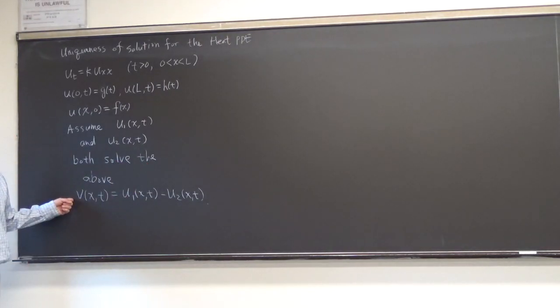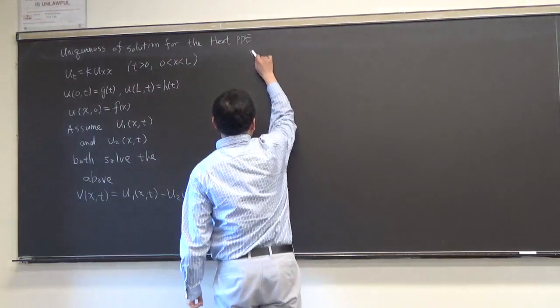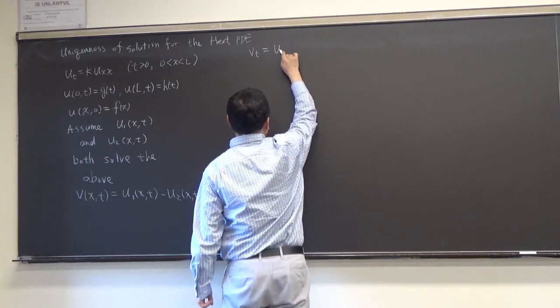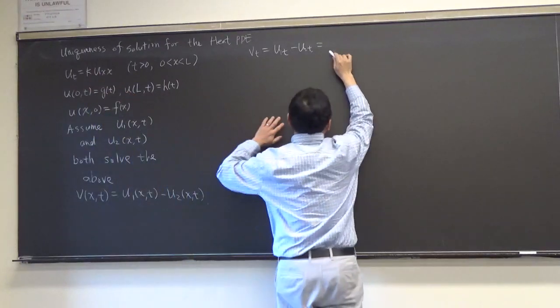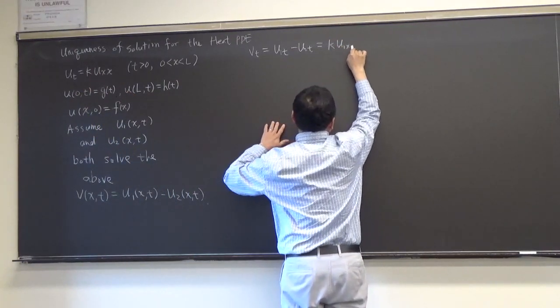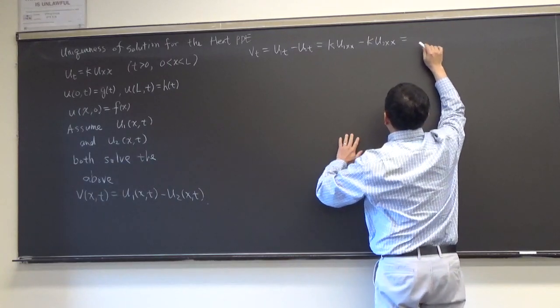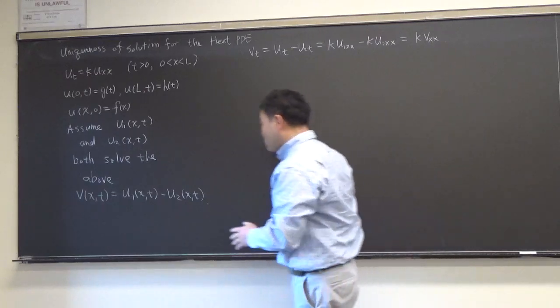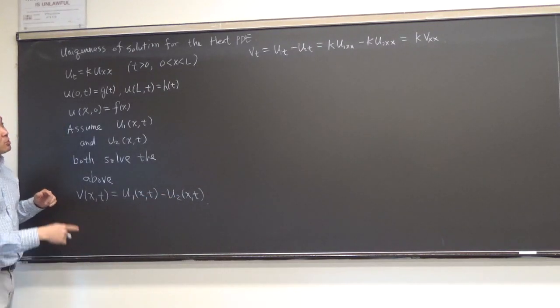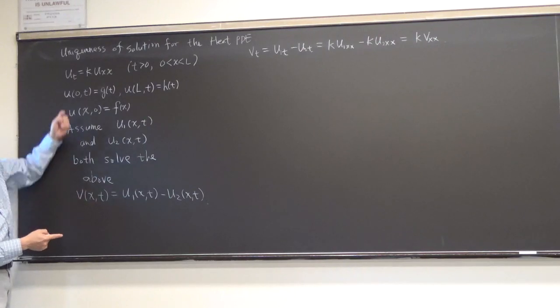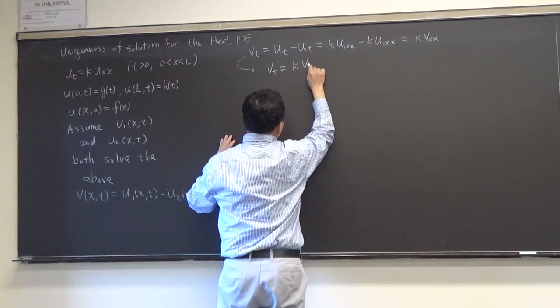But now, look what this would satisfy. See, if you differentiate t, so if you differentiate v by t, that's the same thing as u1_t and u2_t, but because u1 and u2 both satisfy this, it's going to be k times u1_xx minus k times u2_xx, but that's going to be the same thing as k times v_xx. So what does that say? It says that v must also satisfy the heat equation. So this thing says v_t must be equal to k times v_xx.